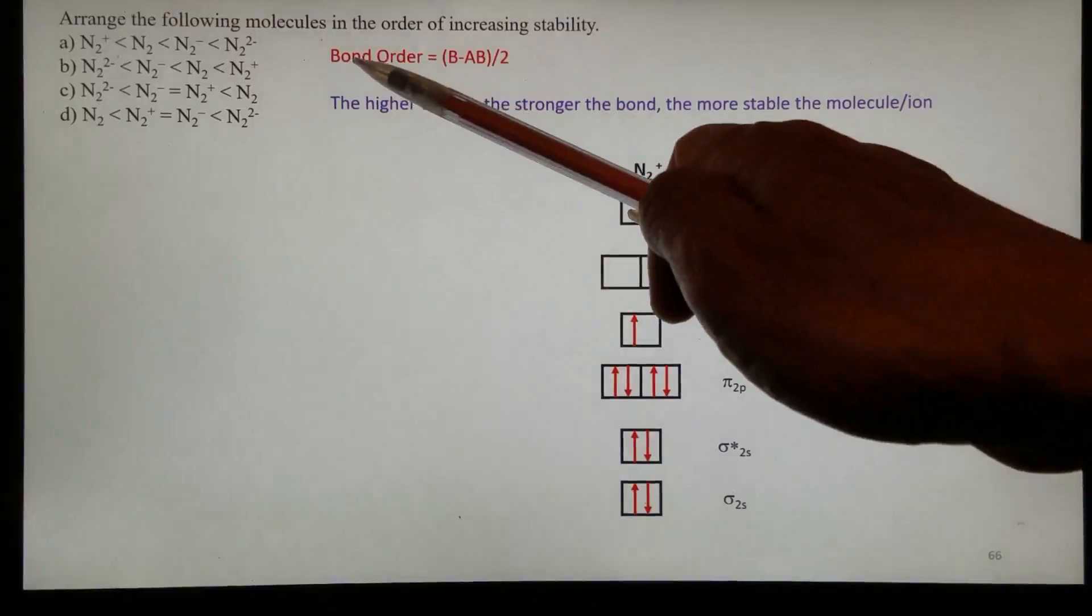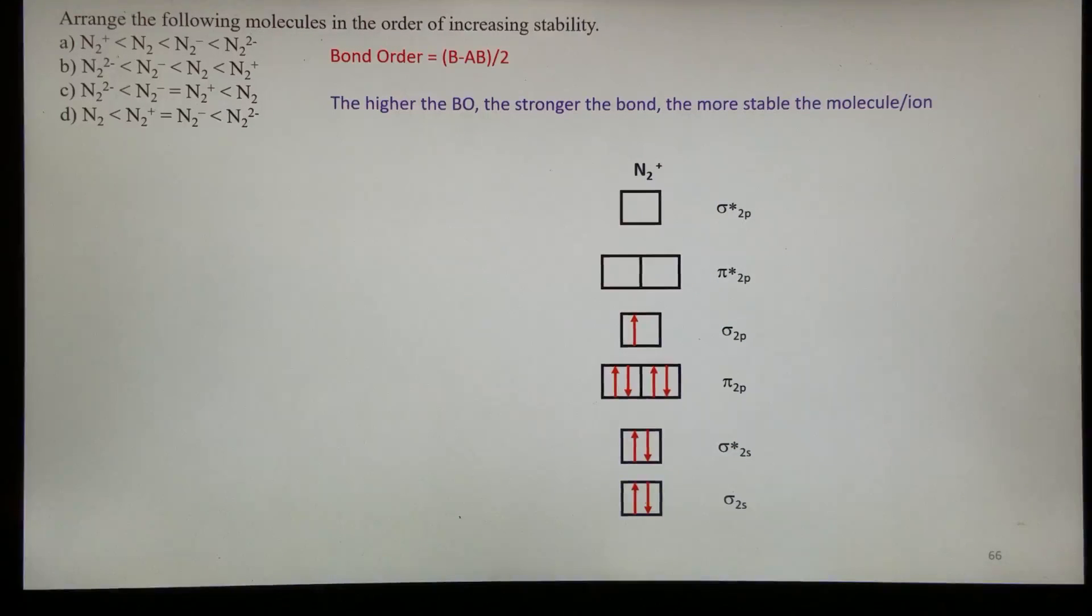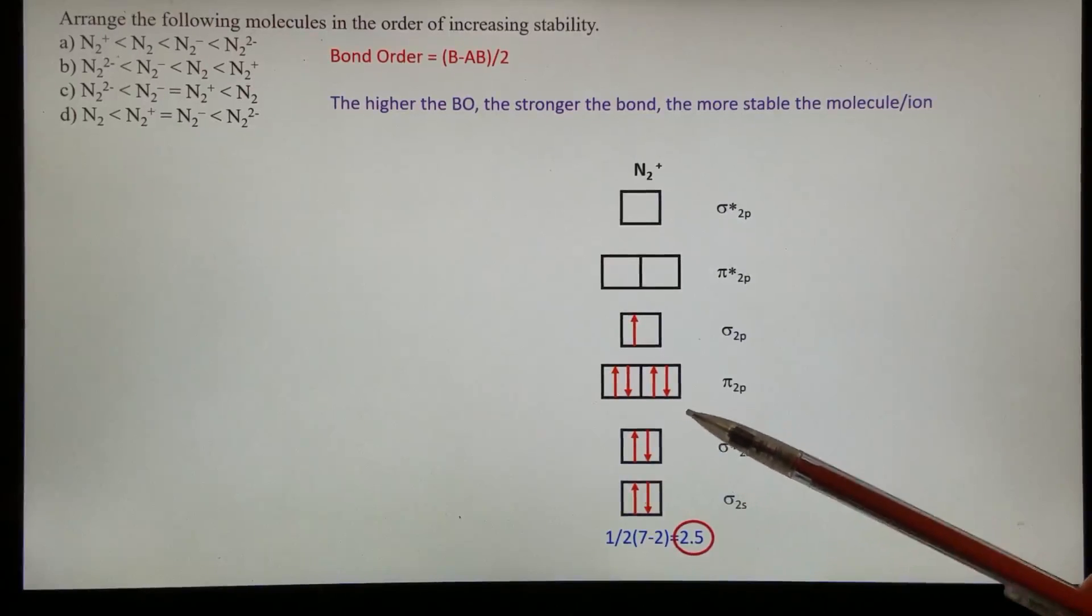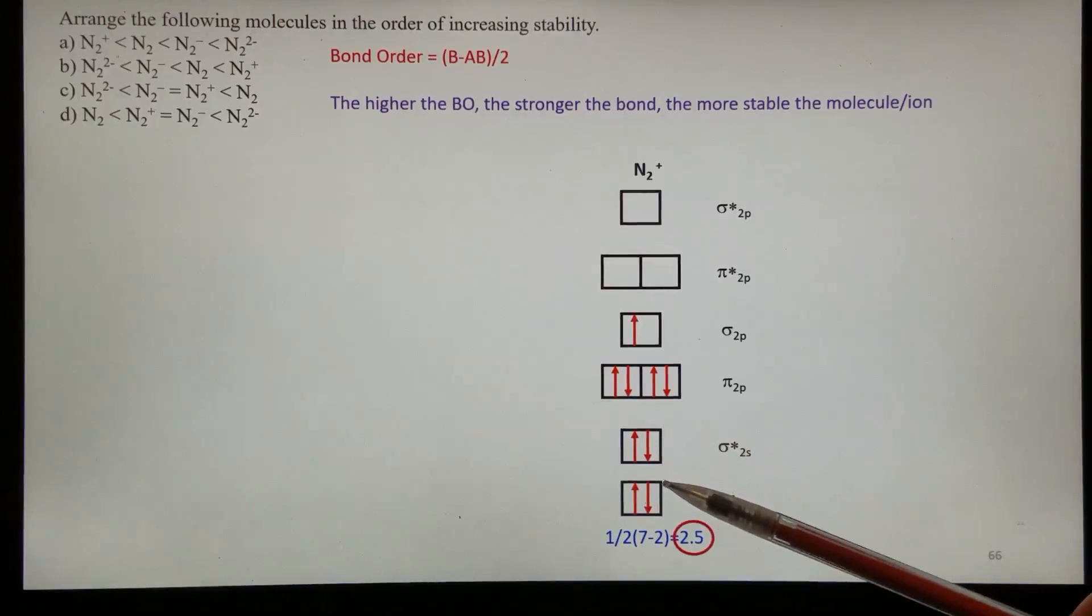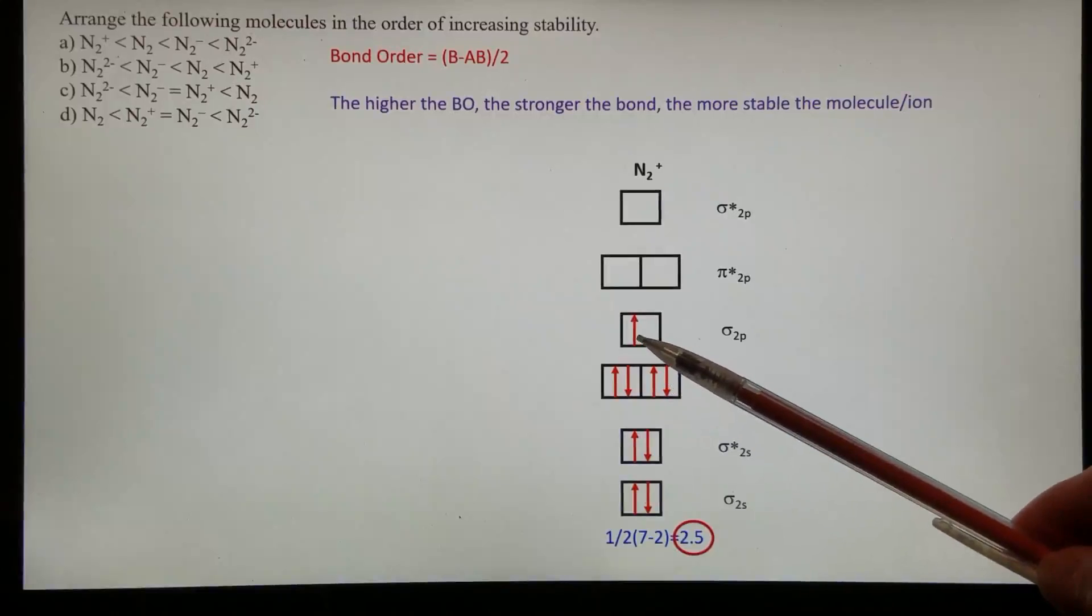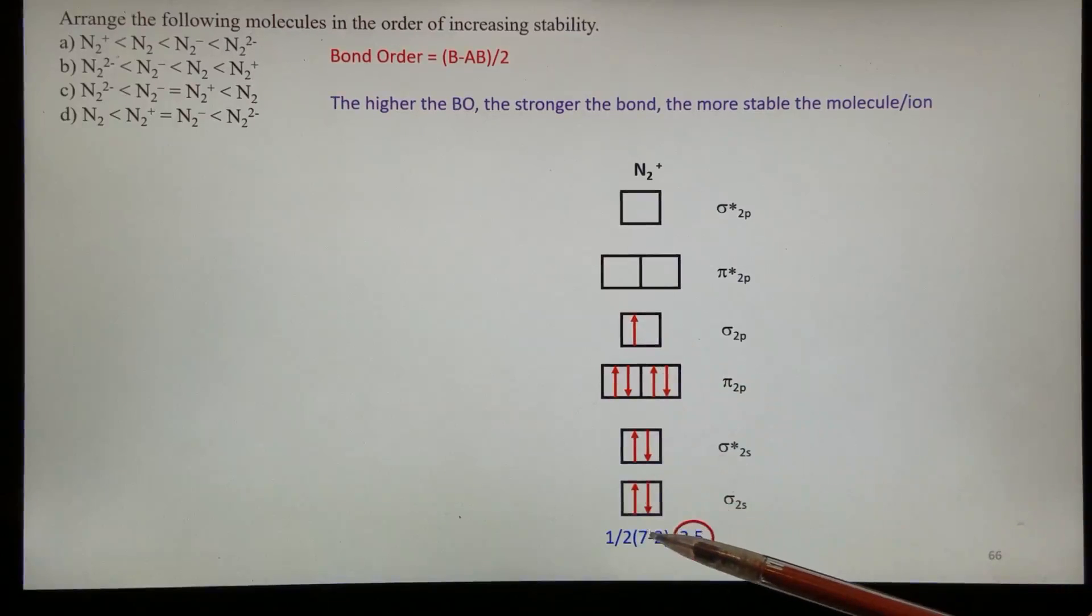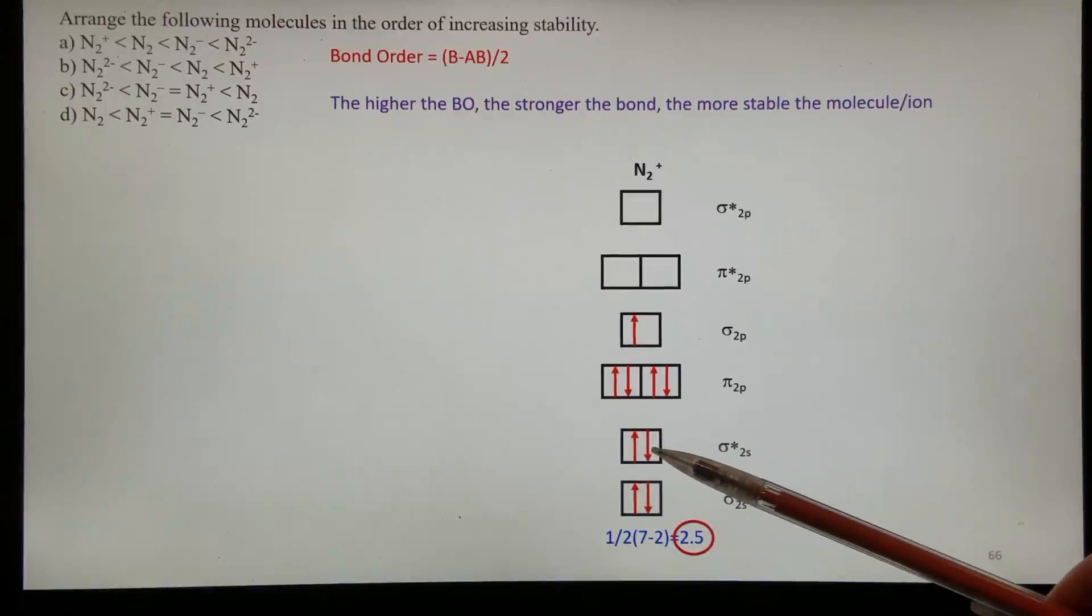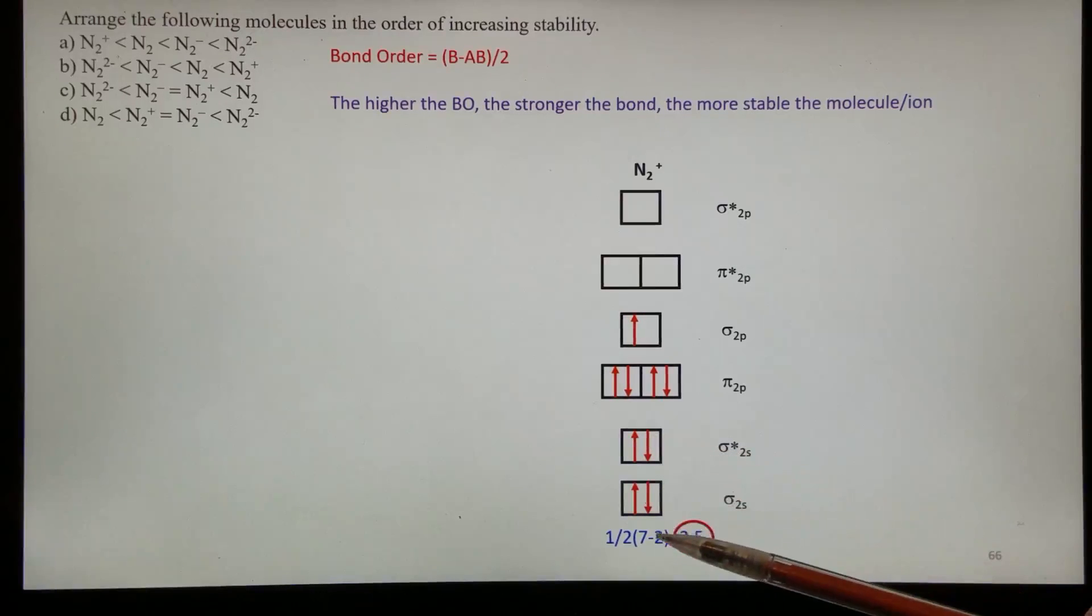So now we are ready to calculate the bond order once you have this diagram. The bonding electrons, 2 plus 4, 6 plus 1, 7. Anti-bonding, you see, anti-bonding here, 2. So therefore, 7 minus 2 equals 5 divided by 2, 2.5.